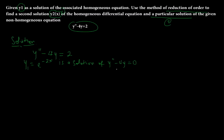We are told to find the second solution y2. The second solution must be linearly independent. So y2 is defined as u(x) times y1, that is y2 = u·e^(-2x). For y2 to satisfy the differential equation we need to find y2 prime and y2 double prime.